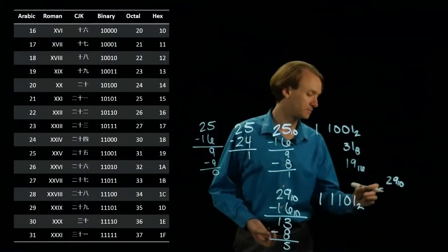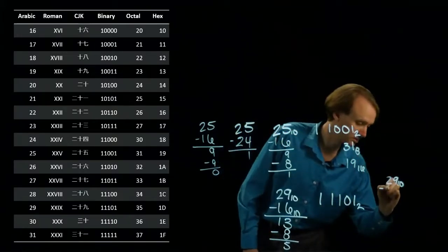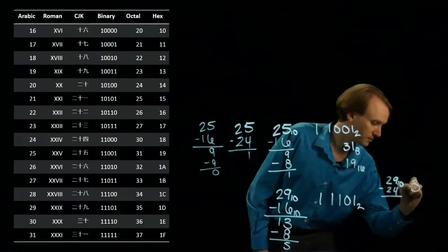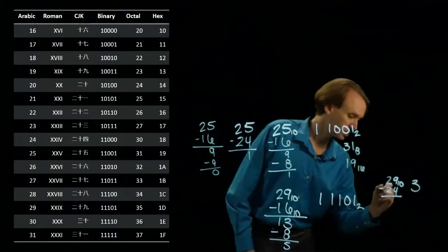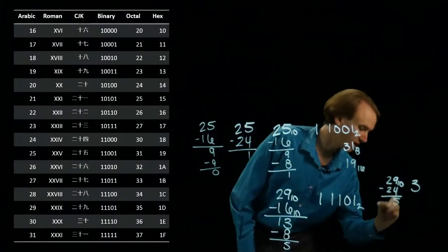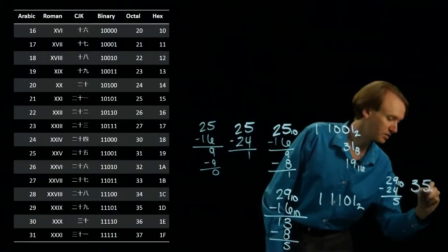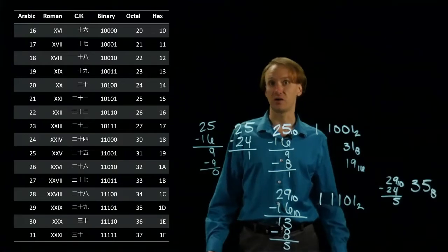but 4 times 8 is 32, so I'll have to live with 3 times 8. So I'll write down a 3 for my 8's position. 29 minus 24 leaves me with 5. So I'm left with 5 times 1. I'll write down 5. And I get 29 is 35 in octal.